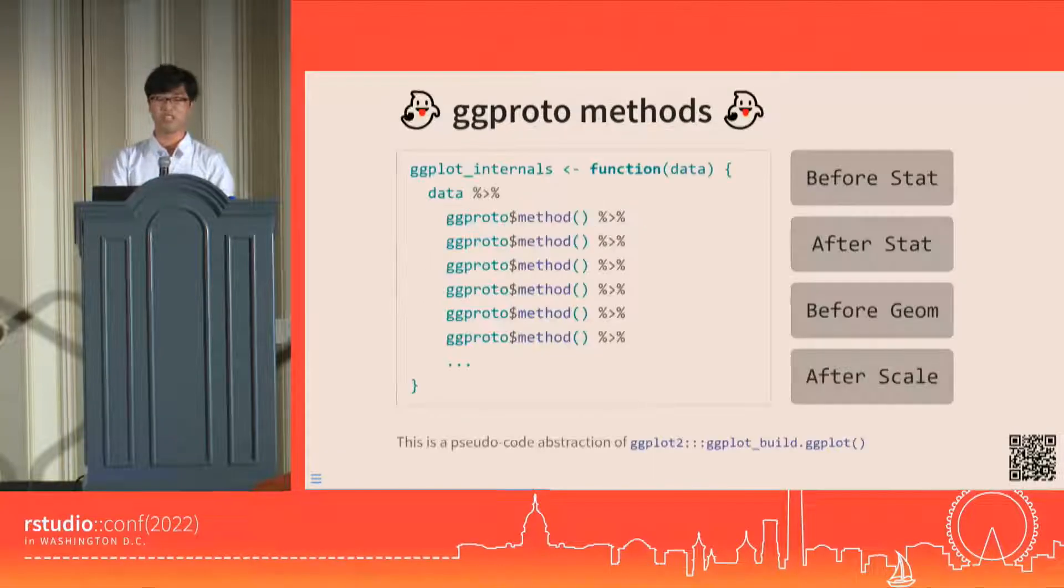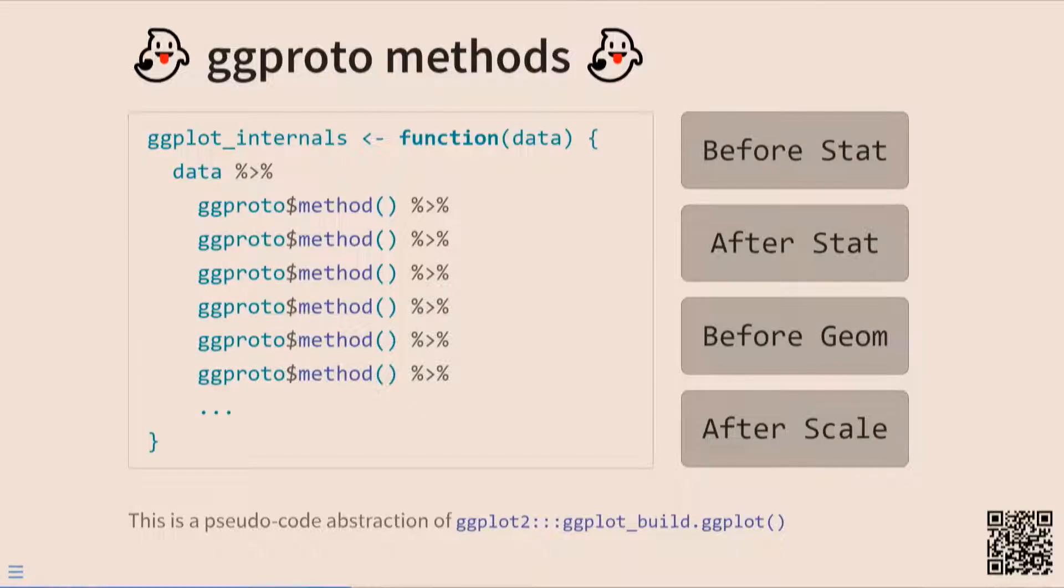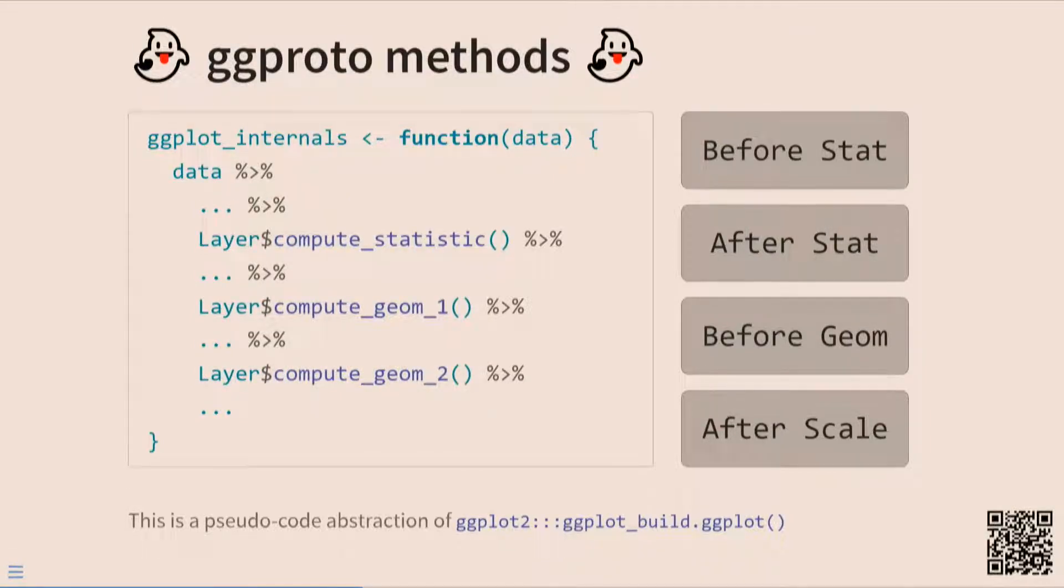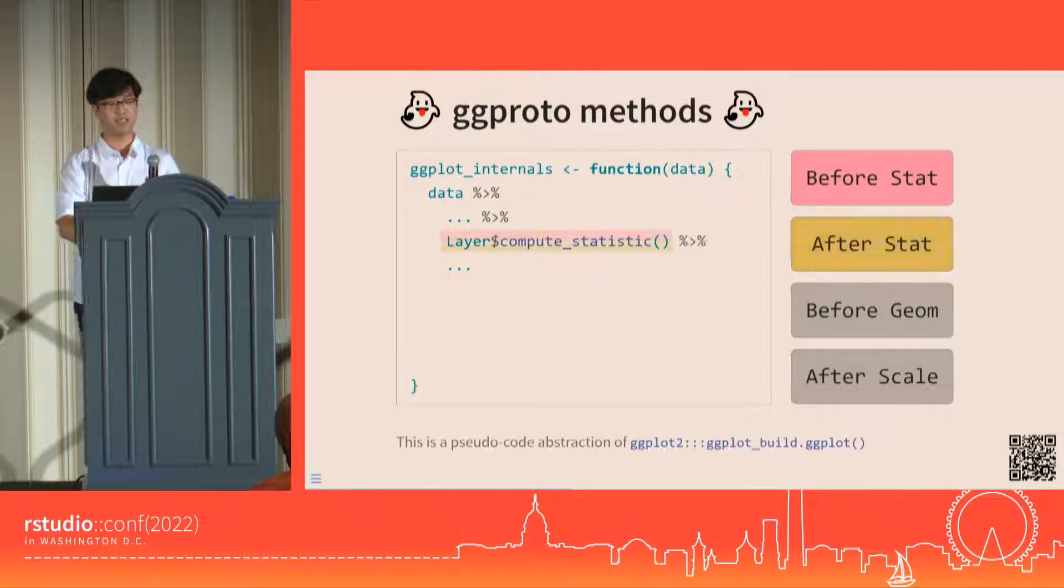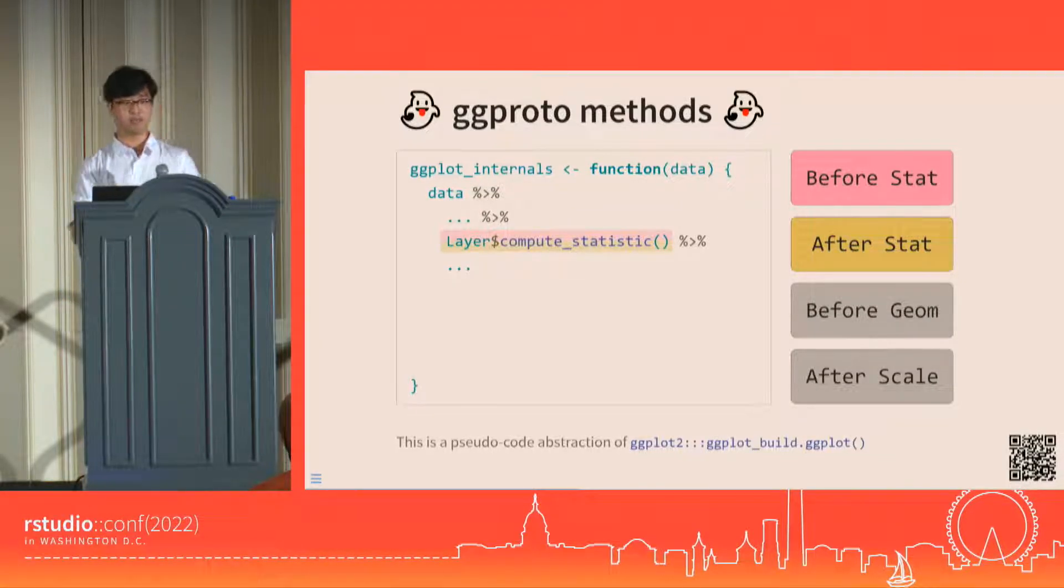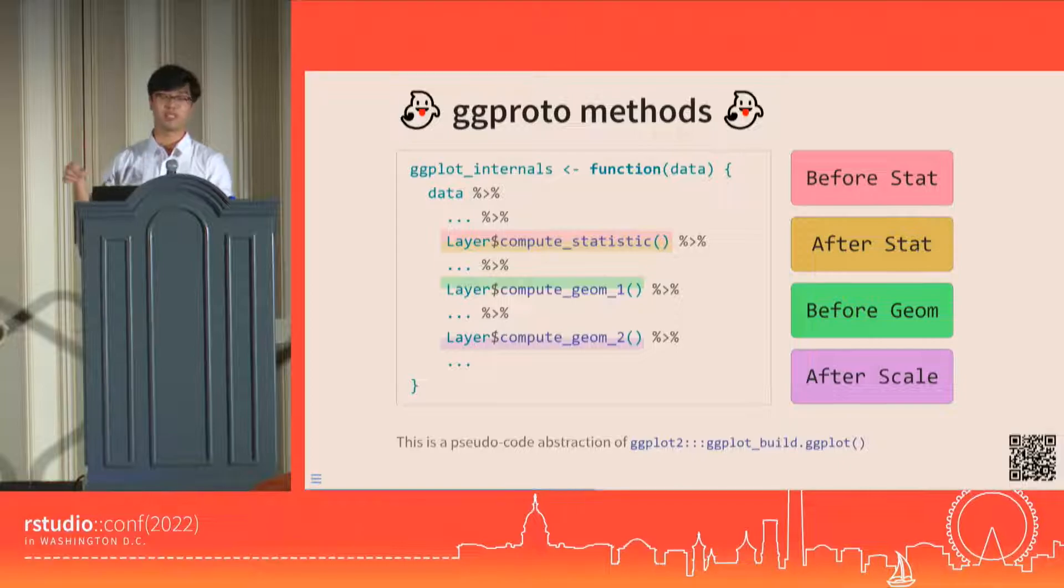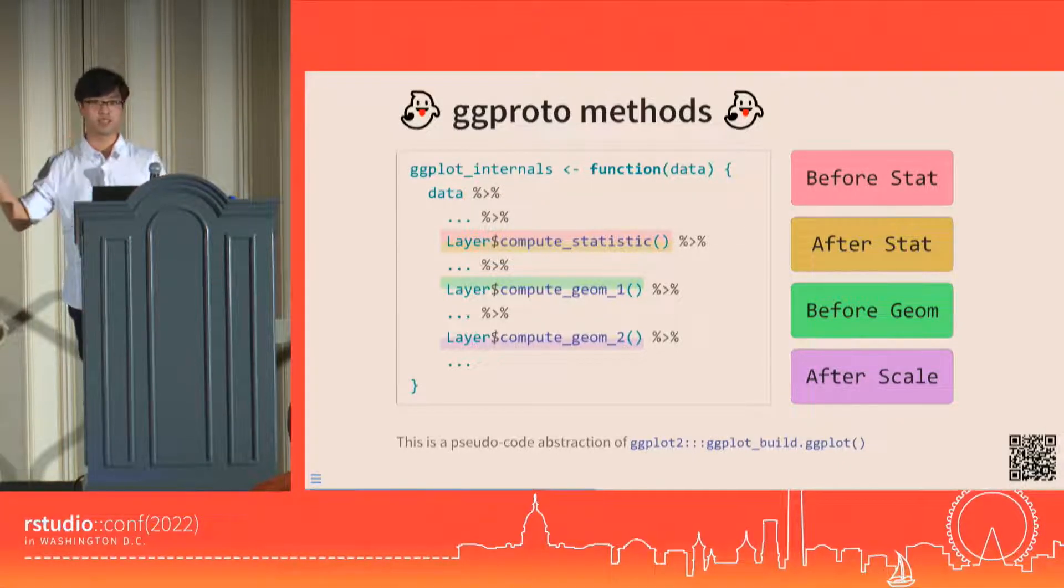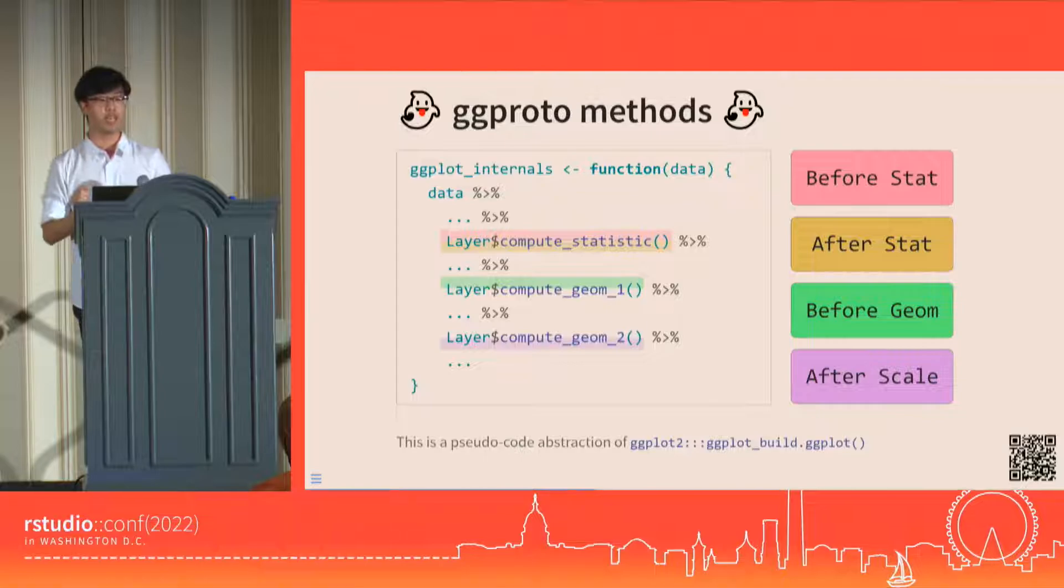We go digging into the internals, and we find that the data passes through these scary-looking things called ggproto methods, and not like the kind of dplyr functions we're familiar with. The four steps that we care about as users are also the inputs and outputs of these ggproto methods. In the internals, the raw data is input, and the before stat data is the state of the layer data when it's passed into the layer ggproto object's compute_statistic method, then the after stat data is the output of that same method, and then the before geom data is the input to this next method, and then the after scale data is the output of this other method, and then some more stuff happens, and then the data becomes drawing ready, and then it gets sent off to be drawn.